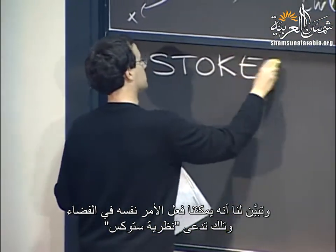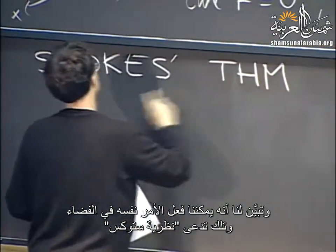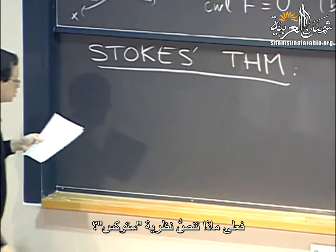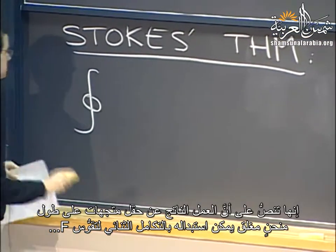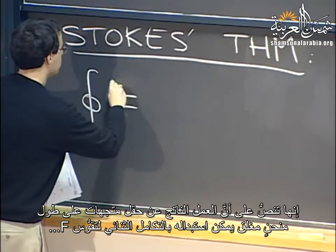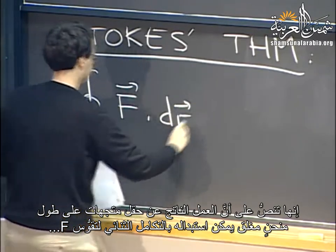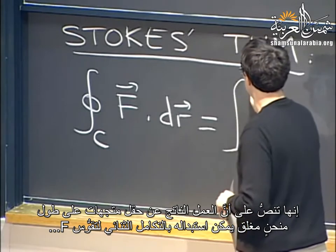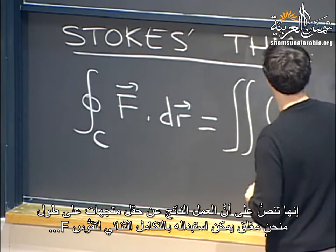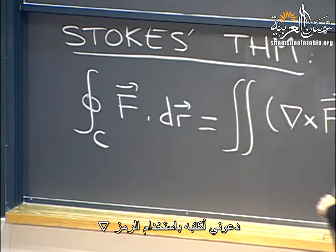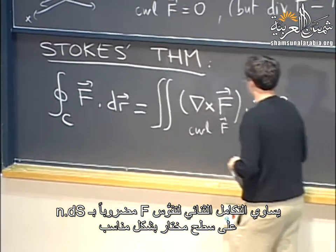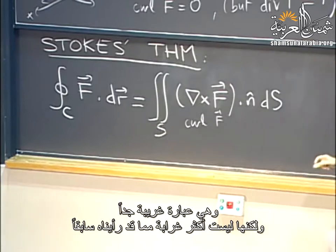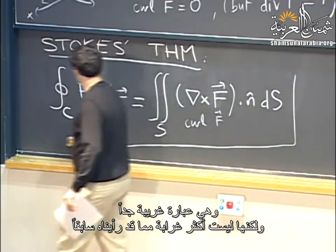What does Stokes' theorem say? It says that the work done by a vector field along a closed curve can be replaced by a double integral of curl F — using the del notation, that's (del × F) · N dS — on a suitably chosen surface.